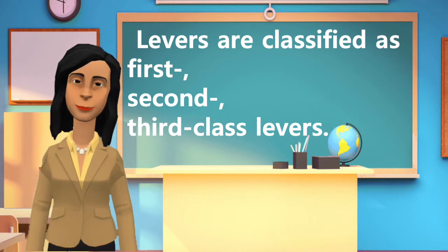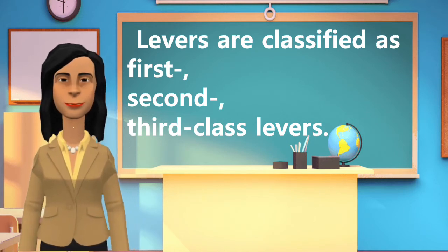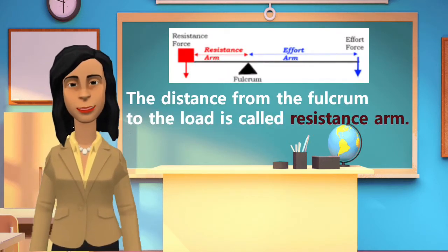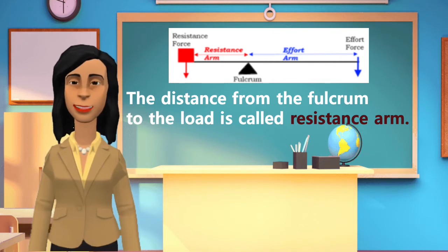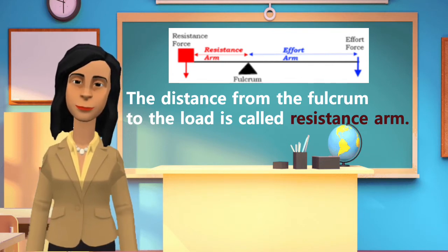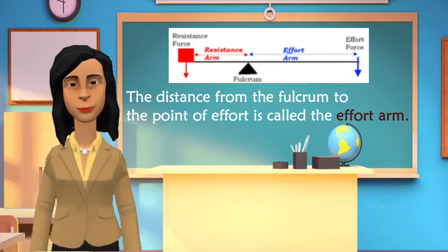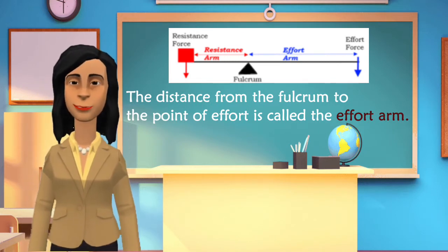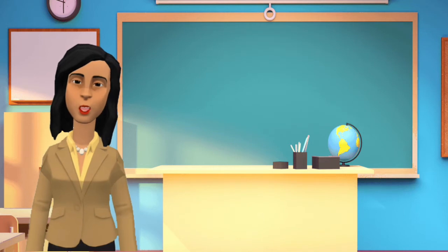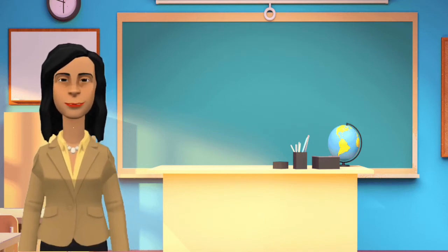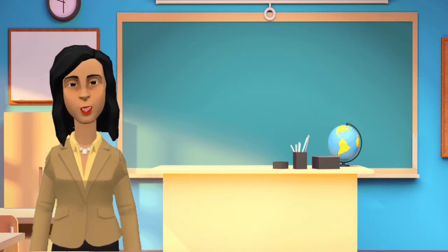Levers are classified as first, second, and third class levers. The distance from the fulcrum to the load is called the resistance arm. The distance from the fulcrum to the point of effort is called the effort arm. There are three classes of levers, each class has the fulcrum, load, and effort at different positions.